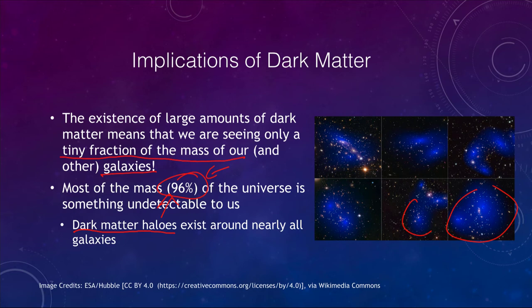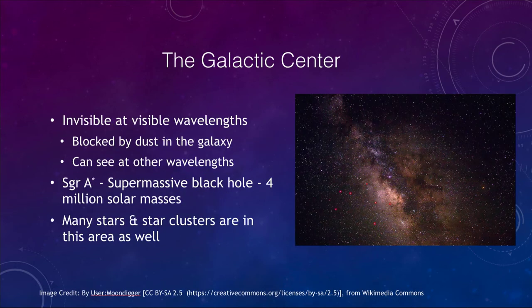Dark matter has very important implications for understanding how galaxies form in the first place — it may be part of what helps form the structure we see in our universe today. Now let's take a look at our galactic center. First of all, it is invisible at visible wavelengths, meaning visible light does not penetrate from the center of our galaxy to reach us here on Earth.